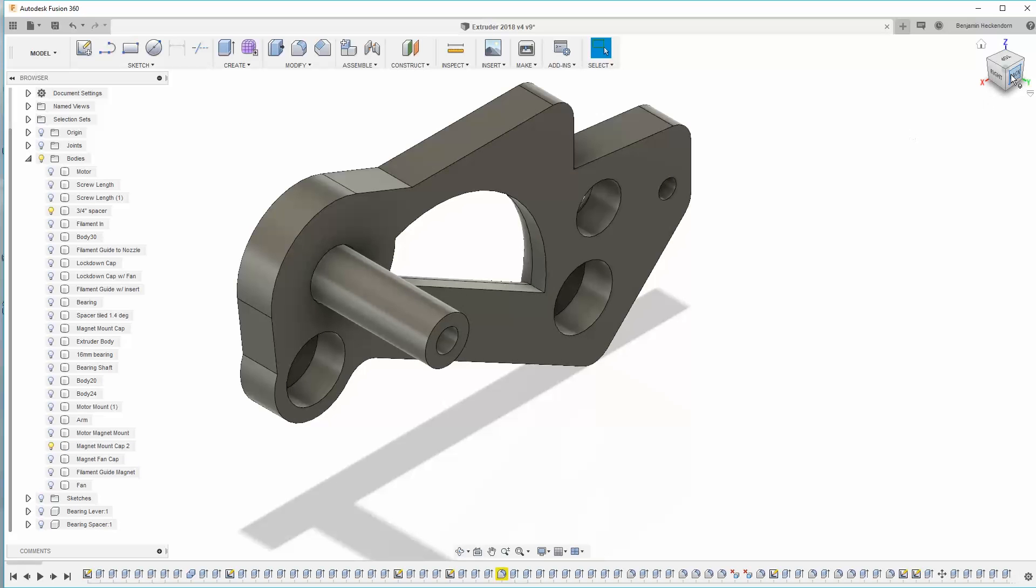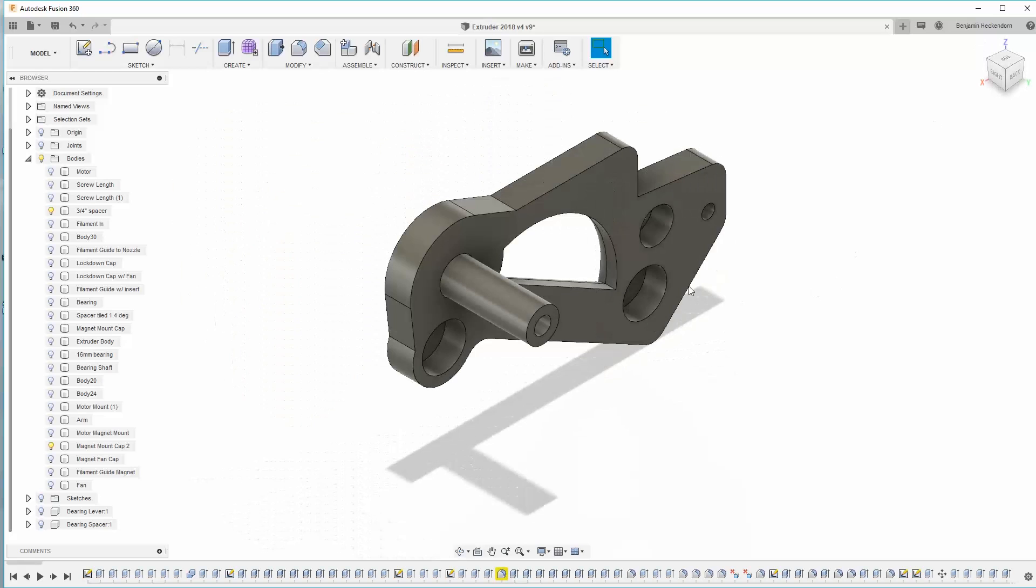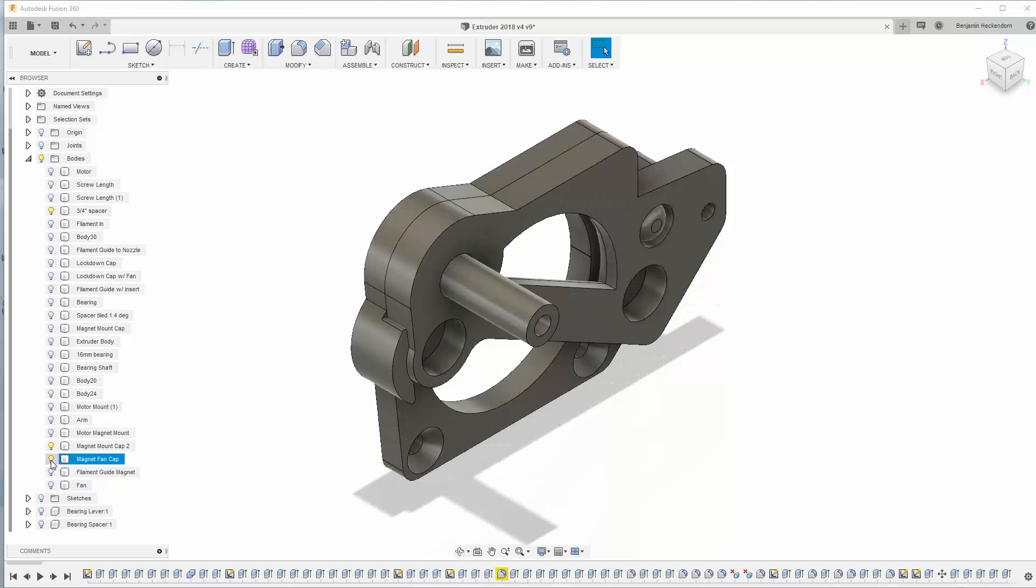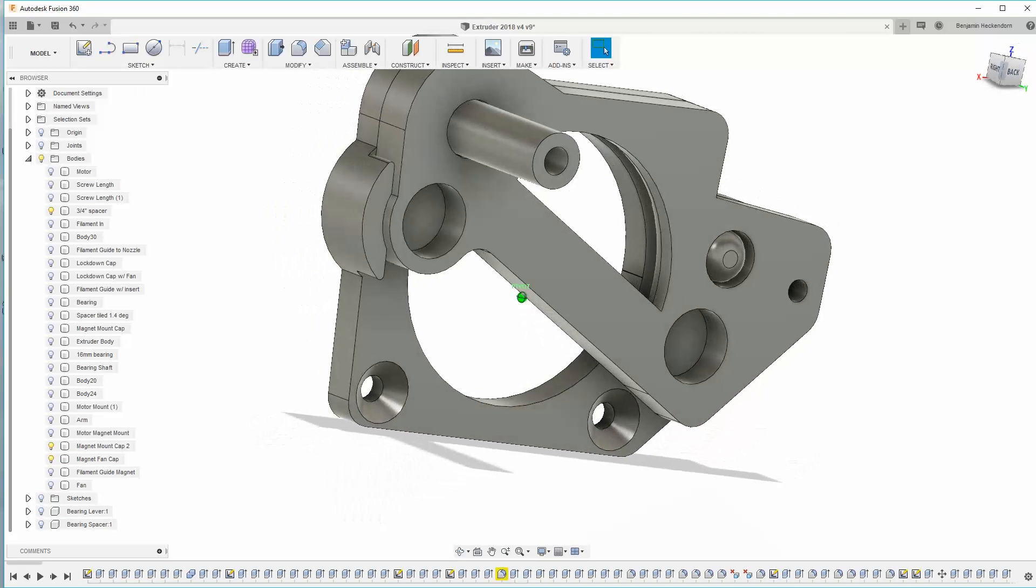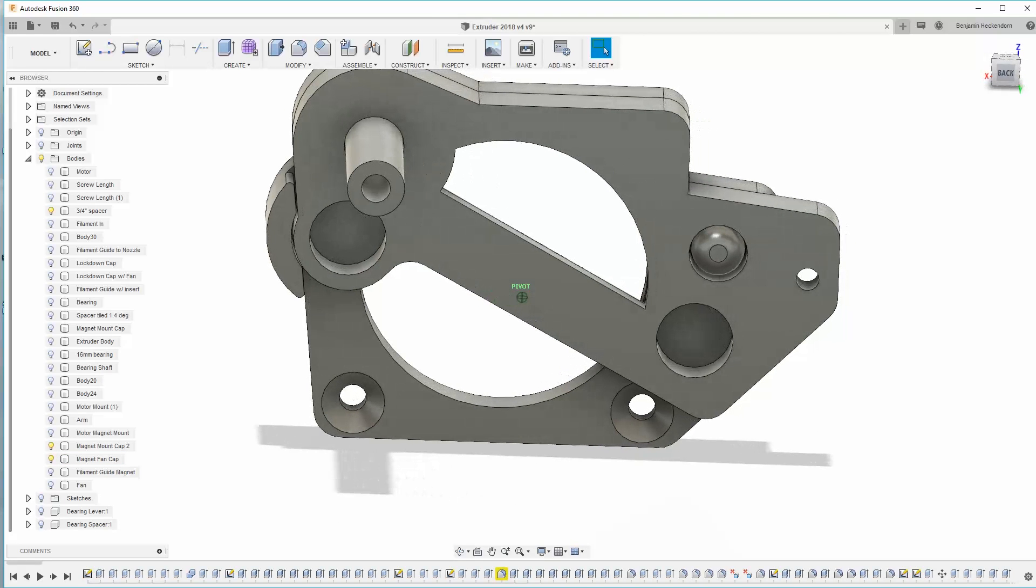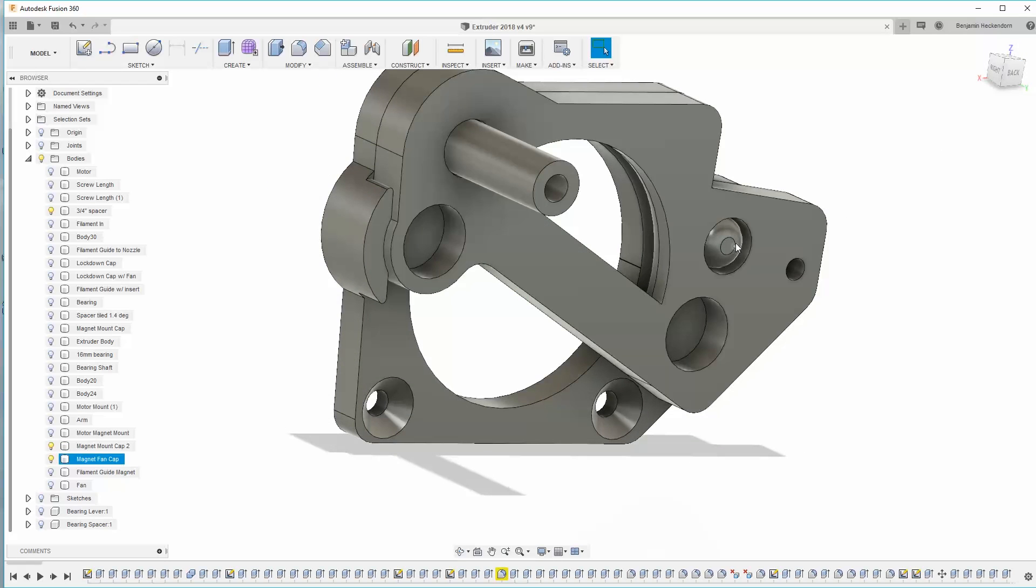And this is what will attach the fan assembly to the motor assembly. Now this hole here that's not for a magnet that's just for a mating piece. Magnet fan cap. This is what the fan actually attaches to and see how it has a shaft that goes through there. That helps this stay as straight as possible. I mean the magnets will hold it on pretty well.